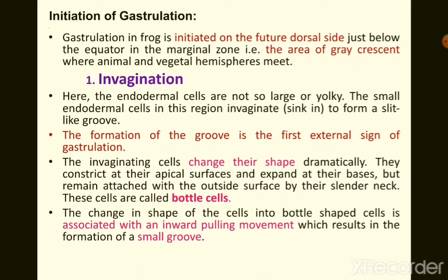The invaginating cells exhibit a drastic change in shape: they constrict at their apical surface and expand at their base, but remain attached to the outside surface by a slender neck. These cells are called bottle cells because of the shape they form.